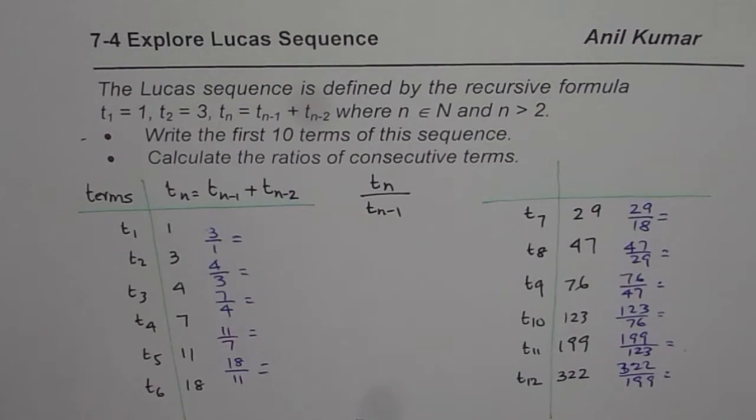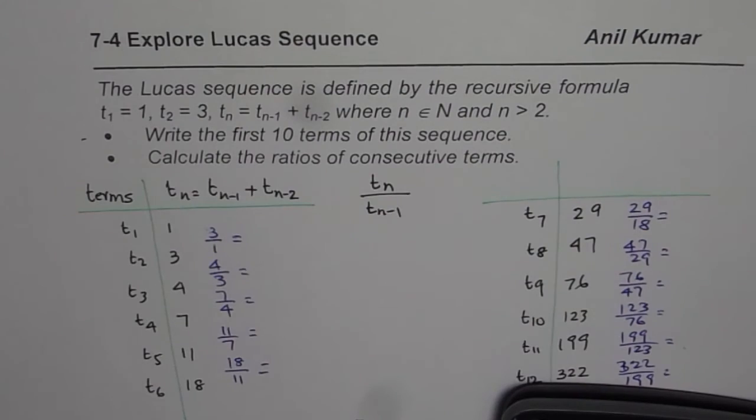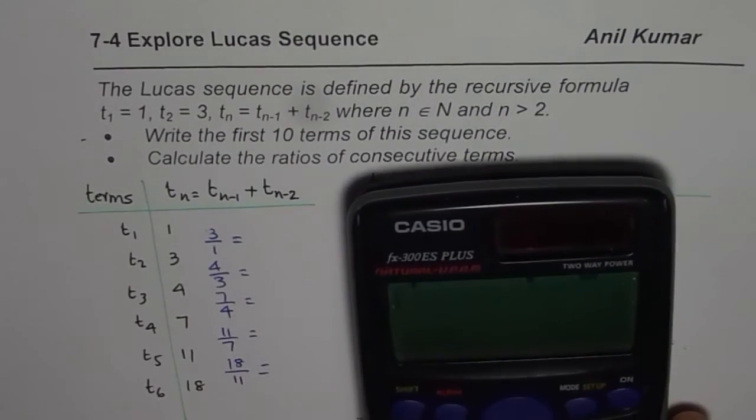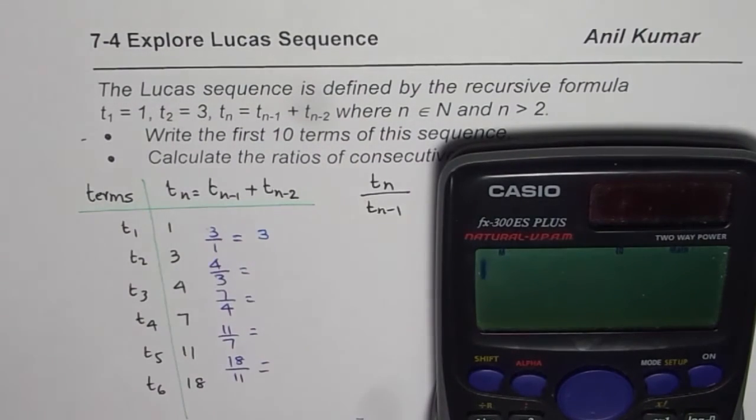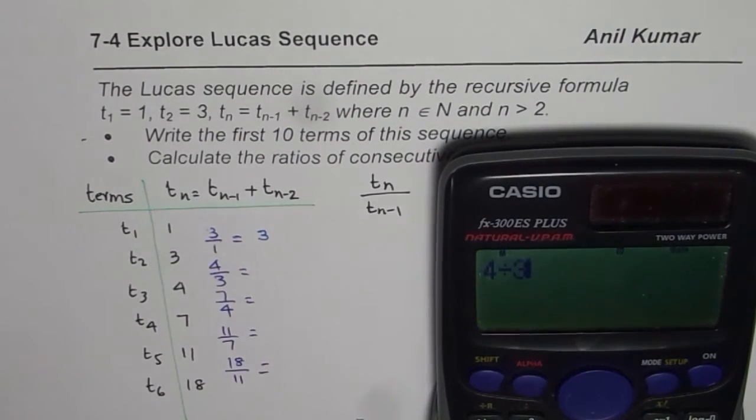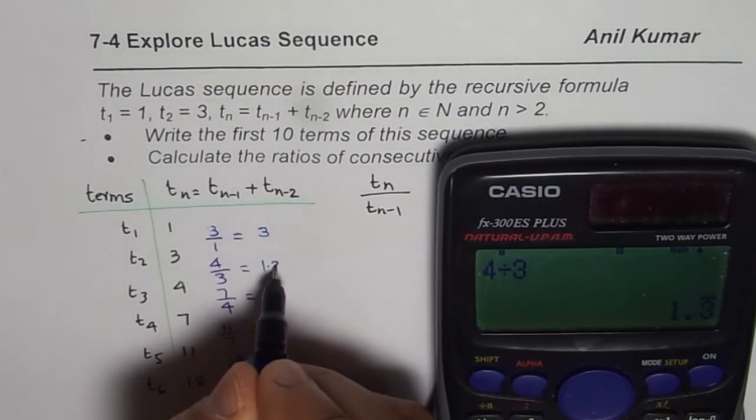So, we will calculate these values, so I will do some values, and what you can do is, you can fill up by calculating the other values. So, of course, 3 divided by 1 is 3, so we will do 4 divided by 3 equals to, in decimals, we will write 1.3. We will skip few,